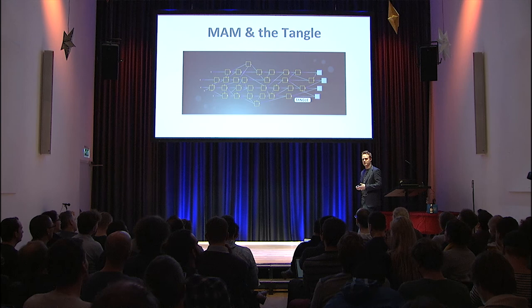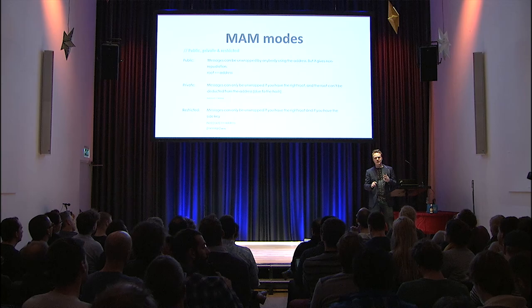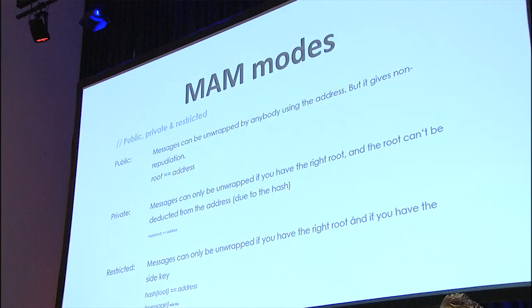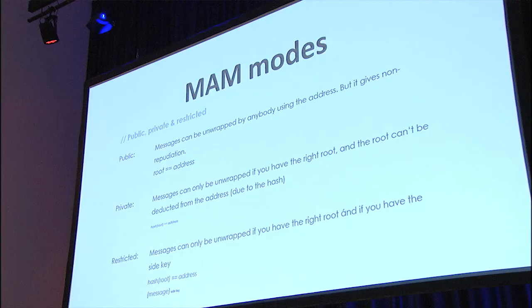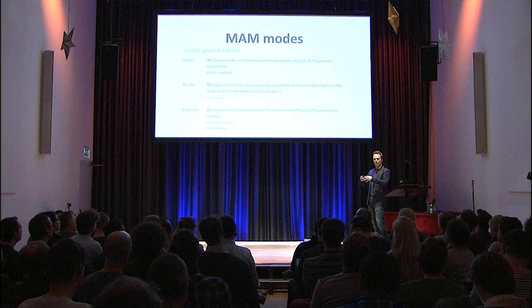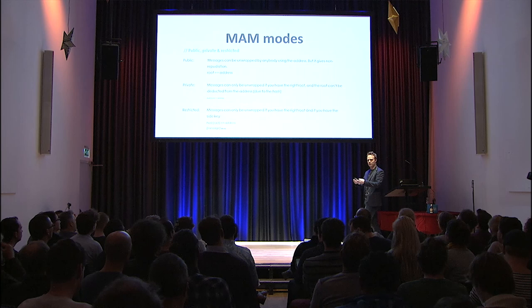So what is MAM about? MAM has three different modes, and you can use them in different use cases. The first one is the public mode. You have non-repudiation — 'onmeerlegbaarheid' in Dutch — which means you sign a message, and because you sign it, you give others reason to believe that the one who sent it out actually is the one who sent it, because it's the only one who can sign it.